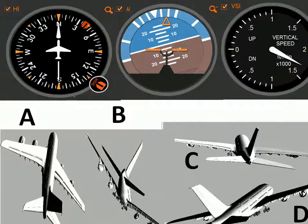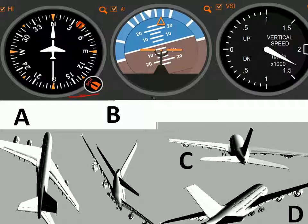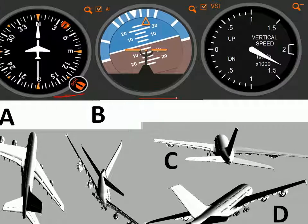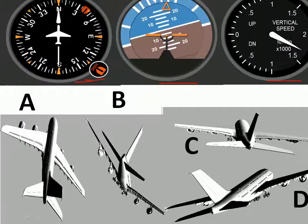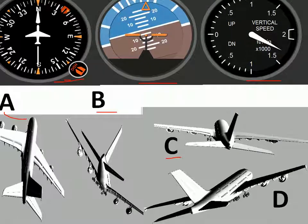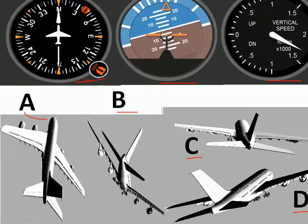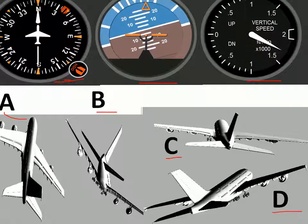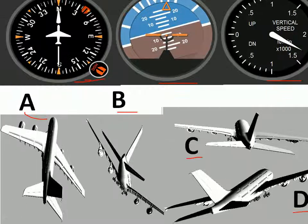In this question you also have three meters: a compass, an attitude indicator, and a vertical speed indicator. From these you will have to identify the correct position of the plane from the four options — A, B, C, and D. The style of airplane diagrams here is different from the previous question. Pause the video and check what the answer can be.